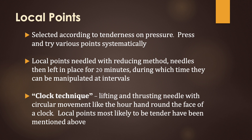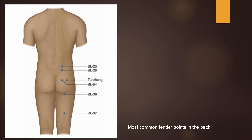Local points are selected according to tenderness on pressure. It is therefore very important to press and try various points systematically. The local points are needled with reducing method, and the needles are then left in place for about 20 minutes, manipulated at intervals. An effective way of reducing the points is to adopt the clock technique — that is, lifting and thrusting the needle with a circular movement, like the hour hand around the face of a clock.